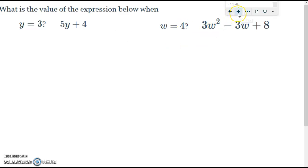All right, let's take a look and see if you got it right. On this first one, you should have 19. You plug in the 3. 3 times 5 is 15. 15 plus 4 is 19.